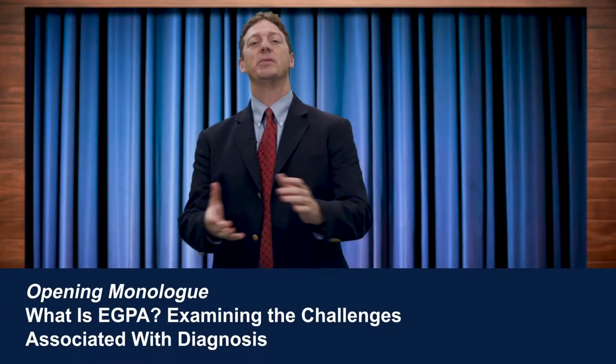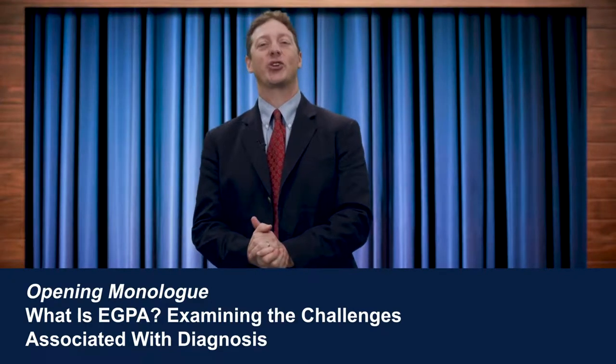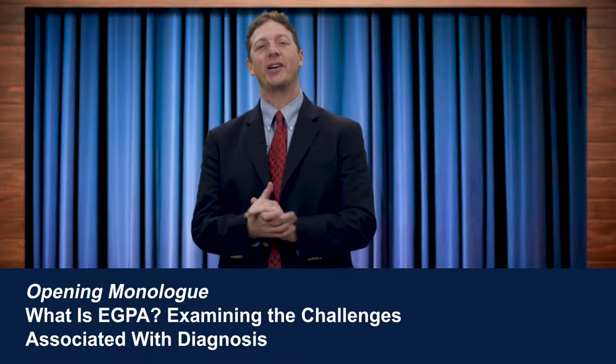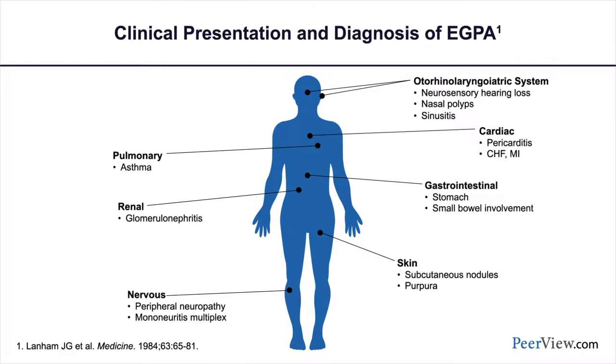I'm Mike Wexler from National Jewish Health in Denver, Colorado. Welcome to this educational activity on relieving the burden of eGPA — examining the latest advances in diagnosis and treatment. Eosinophilic granulomatosis with polyangiitis, or eGPA, was formerly known as Churg-Strauss syndrome. It's an eosinophilic disorder described in the 1950s by Jacob Churg and Lotte Strauss that can affect multiple organ systems. eGPA is characterized by moderate to severe asthma, peripheral blood eosinophilia, mononeuropathy or polyneuropathy, pulmonary infiltrates, paranasal sinus abnormalities, and extravascular eosinophils or eosinophilic vasculitis.